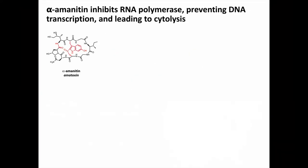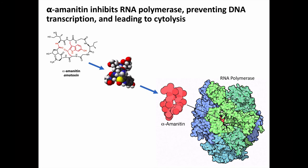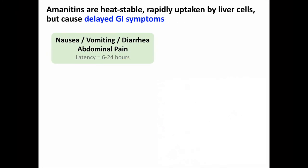The mechanism of alpha-amanitin is to inhibit RNA polymerase, preventing DNA transcription and ultimately leading to cell death. Amanitins are heat-stable, so they survive any cooking process, and are rapidly taken up into liver cells. But they take several hours — usually 6 to 24 hours — before symptoms develop. This is why the rapid onset of GI symptoms after mushroom ingestion is reassuring. However, the situation can be confused if the patient ate more than one mushroom species or had more than one mushroom-containing meal.